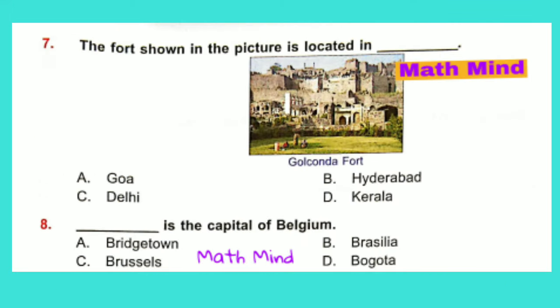Question No. 7: The fort shown in the picture is located in dash. The picture given is Golconda Fort. It is located in Hyderabad, Telangana, India. So Option B is correct.